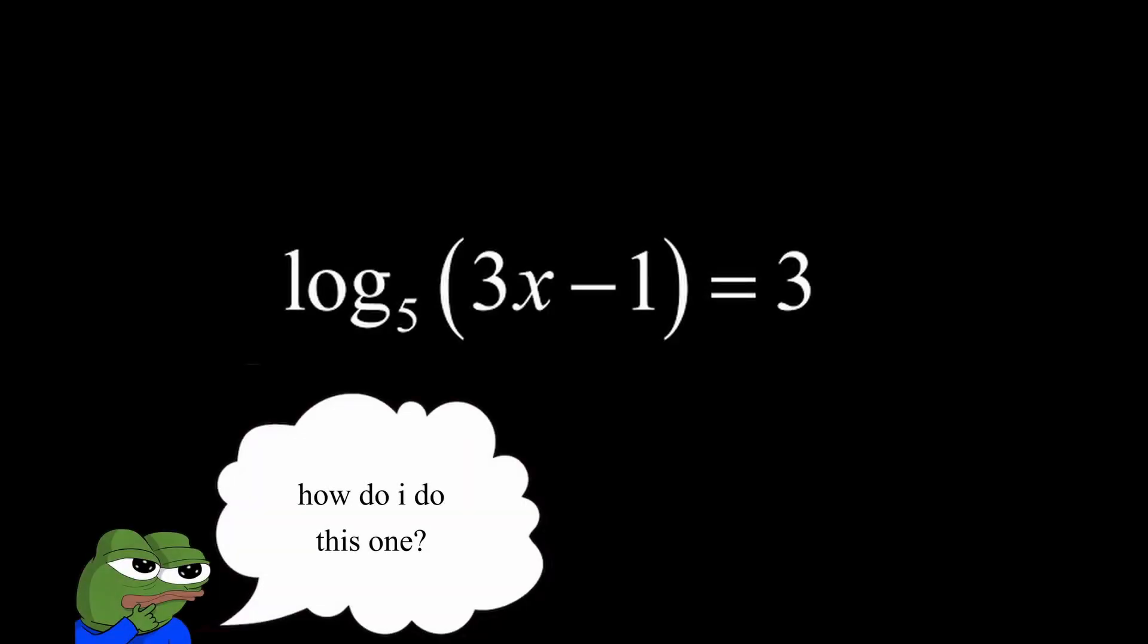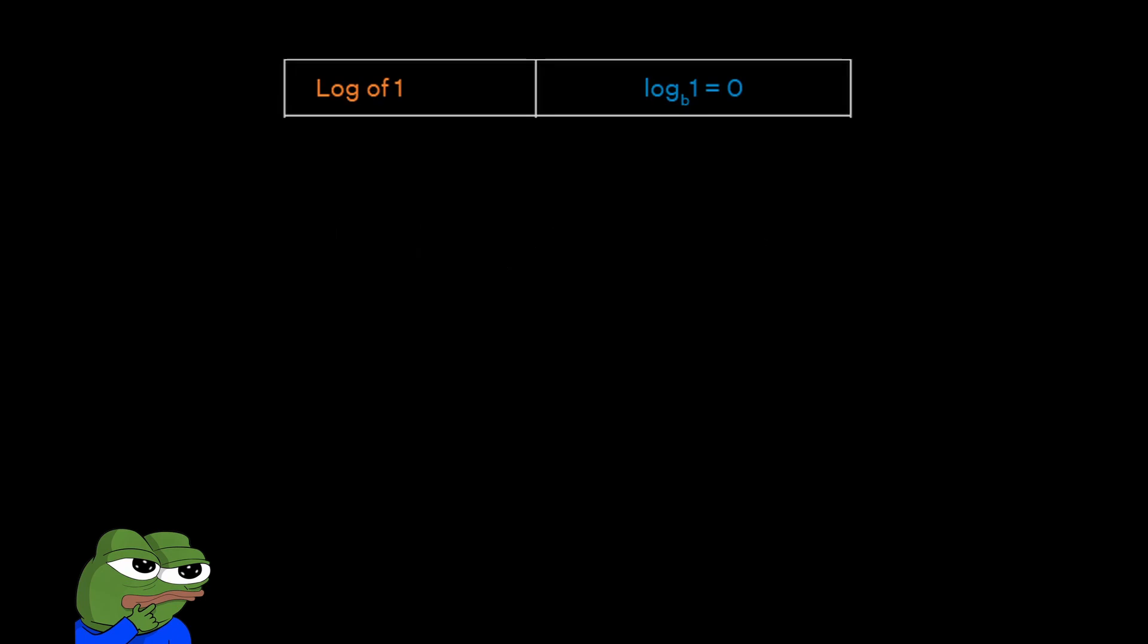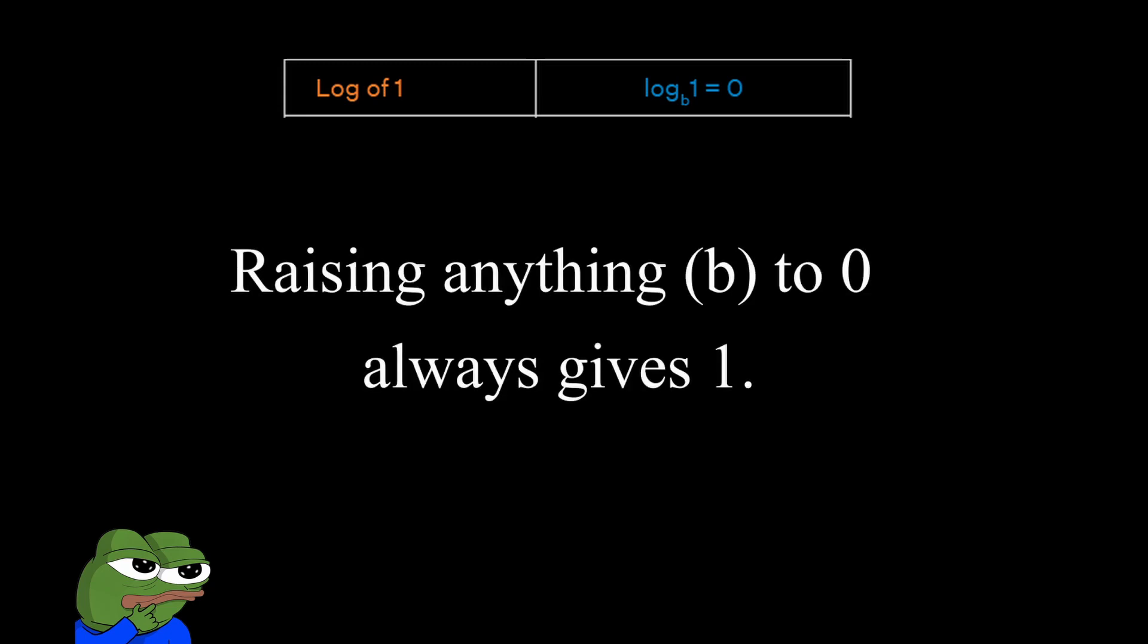But sometimes the expressions are a bit more complex, and we'll need to know how to evaluate them. And that's why we have our rules of log. Let's start with the first rule, the logarithm of 1. Log base b of 1 is always equal to 0, because if you raise any number to 0, it ends up as 1.